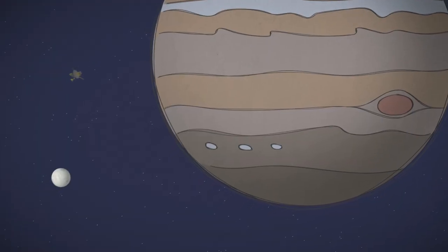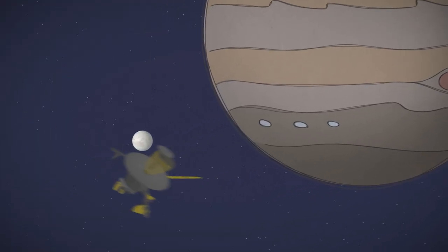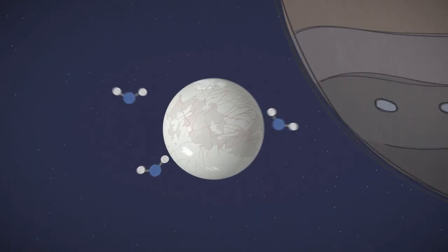Why do scientists think so? First, a spacecraft showed us. Europa's surface is mostly made of water ice, with some salts.